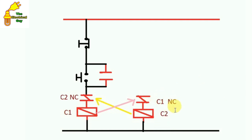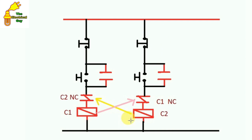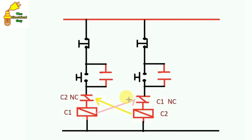Now complete this circuit. Friends, you can see here I used two DOL starters, and two interlocks are used — I mean interlocking is applied here. You can see this C2 contactor — the NC contact of C2 is used here, and for C1 contactor, the NC contact of C1 is used here.